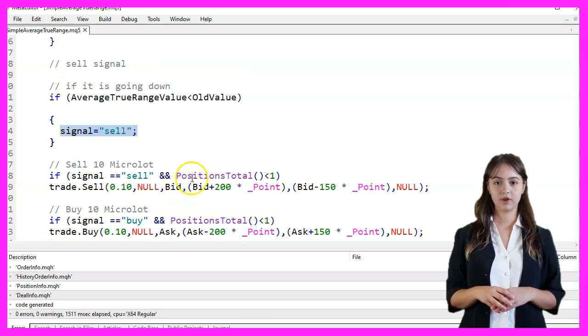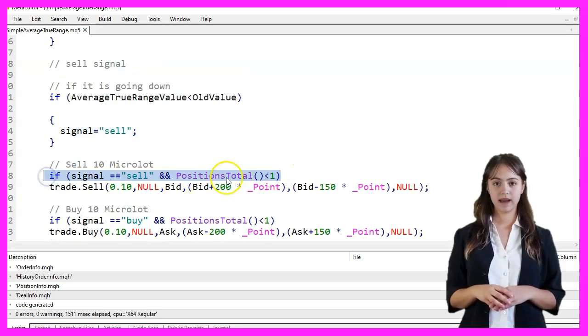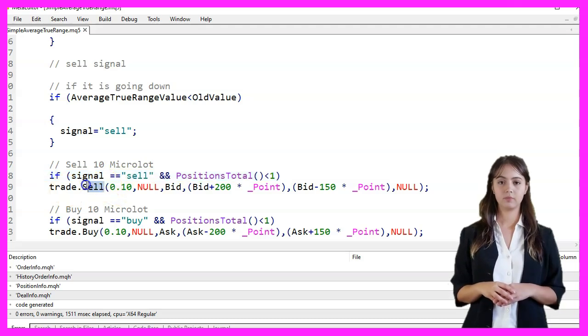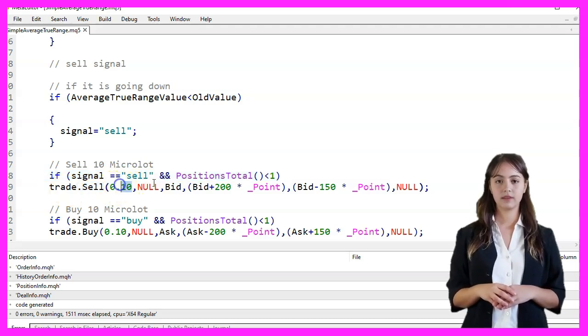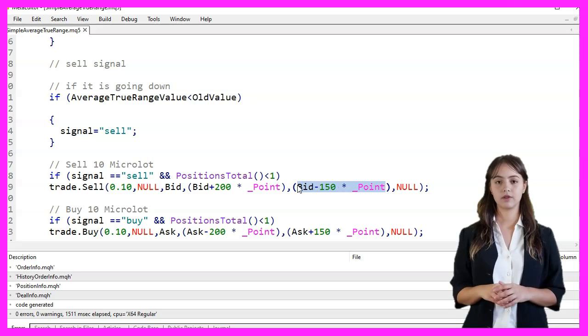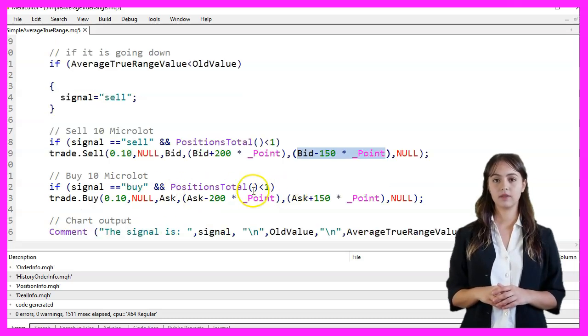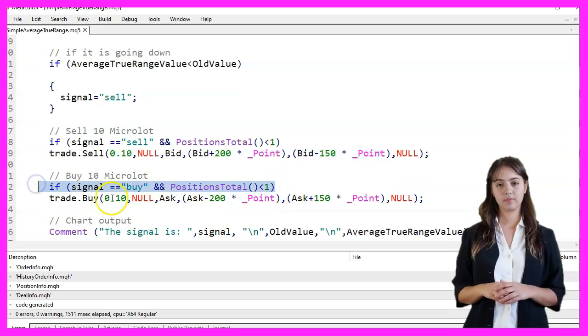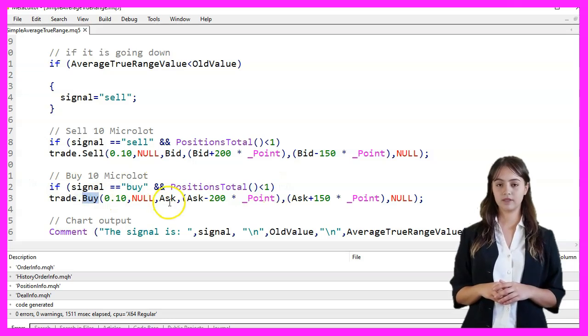If the signal is Sell and there are no open positions, we execute a Sell order of 0.10 lots at the bid price. If the signal is Buy and there are no open positions, we execute a Buy order of 0.10 lots at the Ask price.